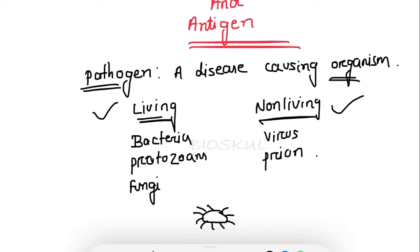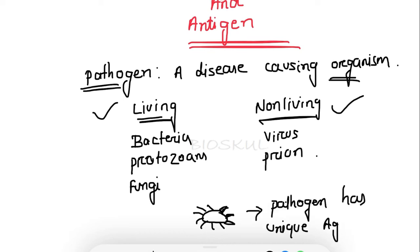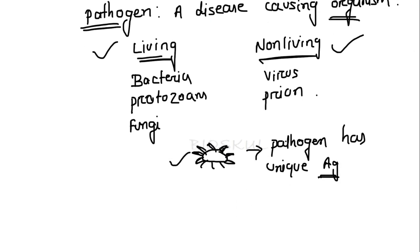On the surface of a pathogen, there are unique antigens. These unique antigens are present on the surface of the pathogen. So the pathogen as a whole is not an antigen — on the surface of the pathogen, specific or unique antigens are present, and these antigens bind to antibodies.